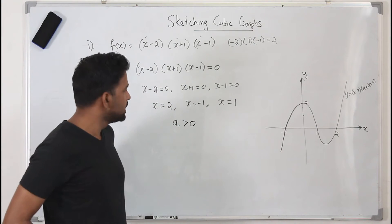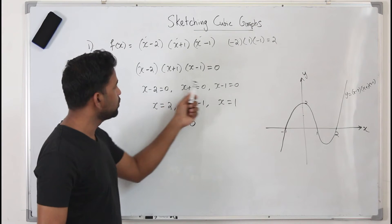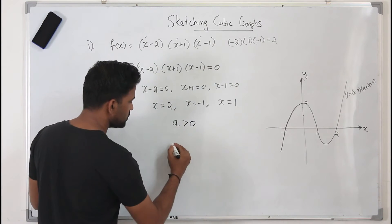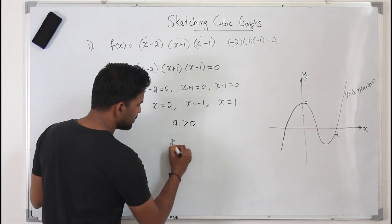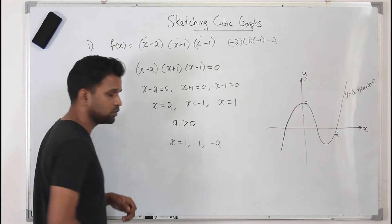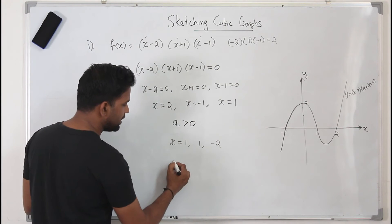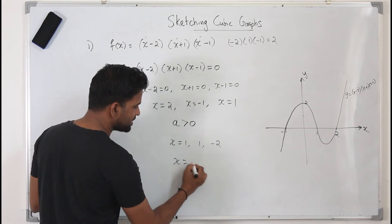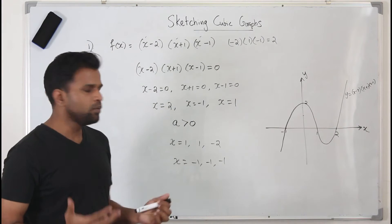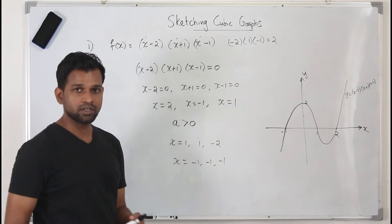Sometimes when you find the roots of a cubic function you get two equal roots — for example x = 1, 1, and −2. And sometimes all three values can be the same, like −1, −1, −1. Let's look at what to do when we encounter these types of cubic functions.